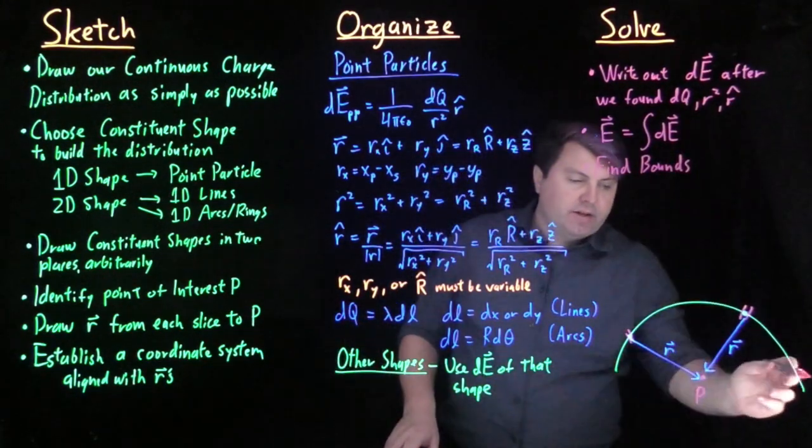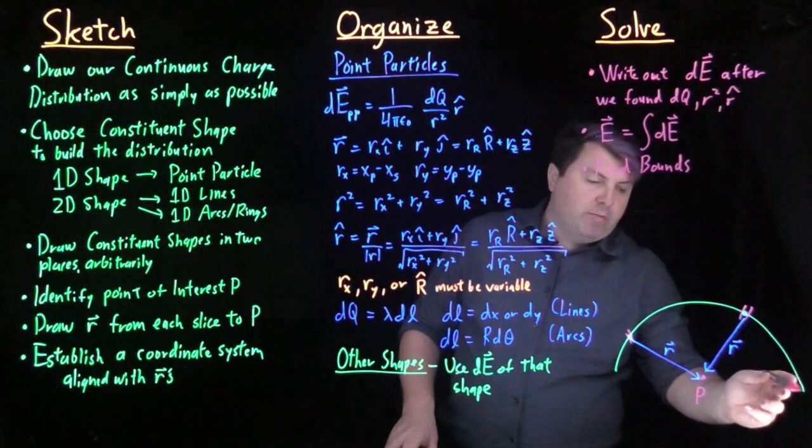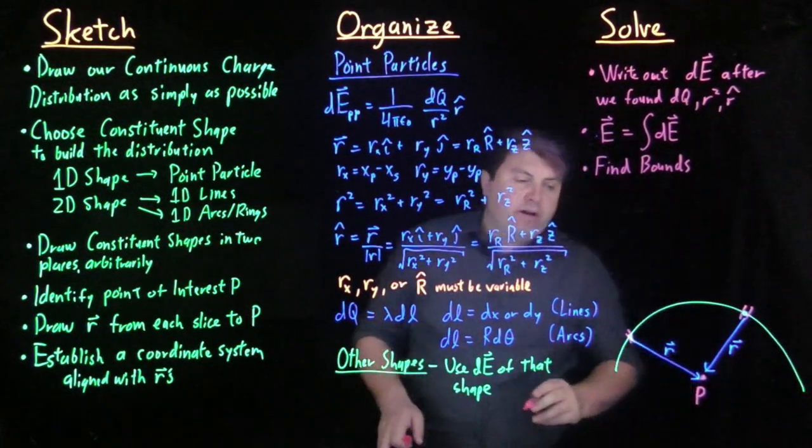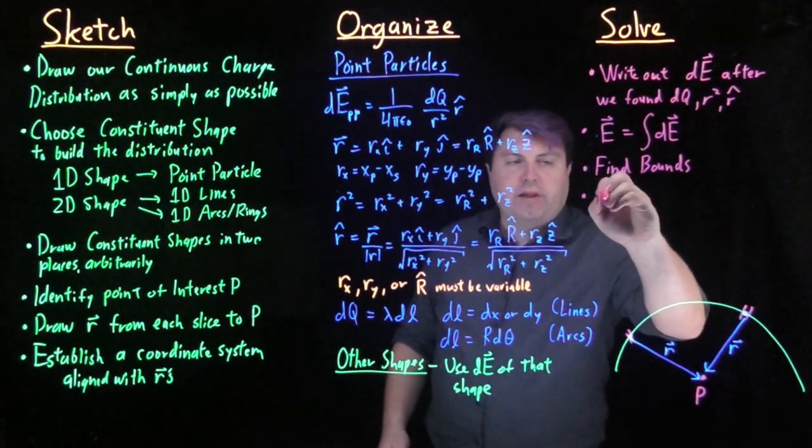In this case, we would have our bounds be from one angle, probably zero, to another angle, 180 or pi. And we would then have an integral over this.